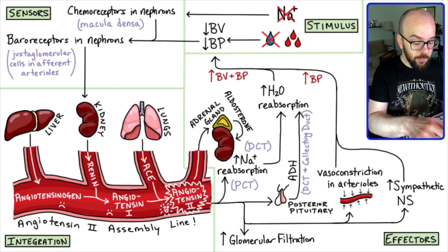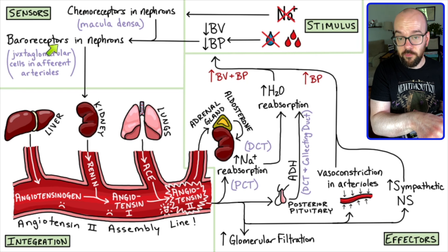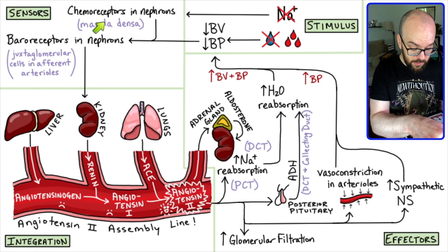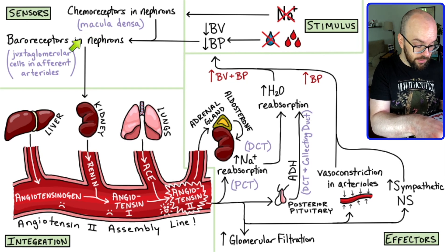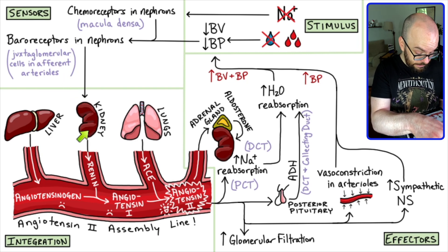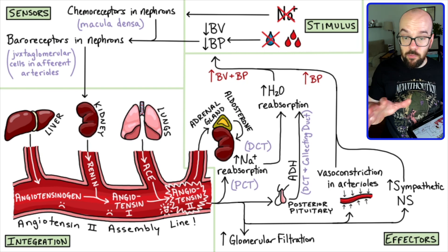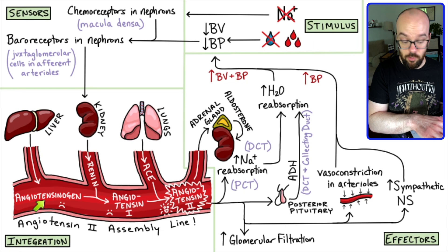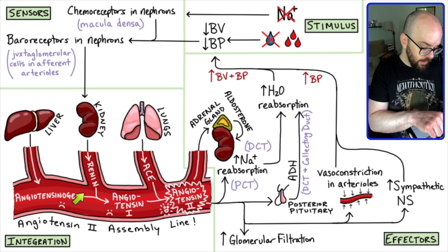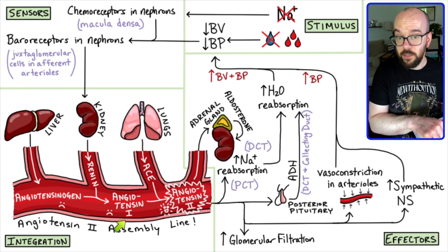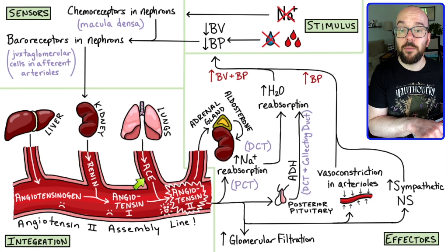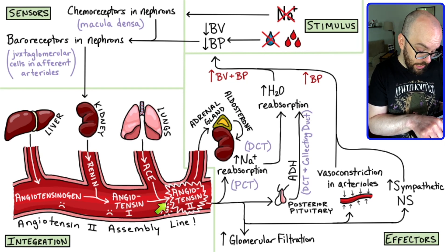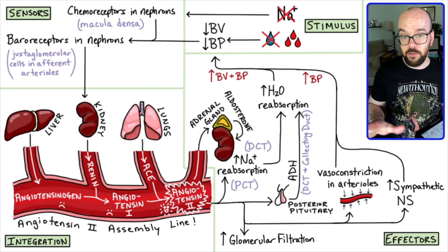Full recap: This whole process starts by detecting a change in blood pressure, blood volume, or sodium levels. Baroreceptors in the juxtaglomerular cells of the afferent arterioles detect decreased blood volume or blood pressure. Chemoreceptors in the macula densa of the distal convoluted tubule detect low sodium and signal the juxtaglomerular cells. Those juxtaglomerular cells release the enzyme renin. Meanwhile, the liver has produced angiotensinogen — an inactive hormone. Renin converts angiotensinogen into angiotensin I, still inactive. Then angiotensin-converting enzyme made by the lungs converts angiotensin I into angiotensin II, a very active hormone.